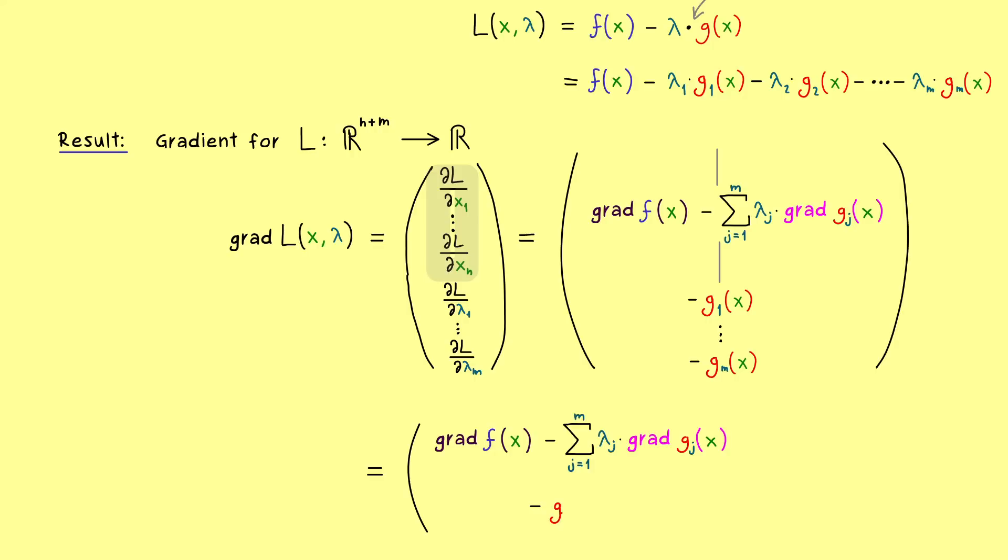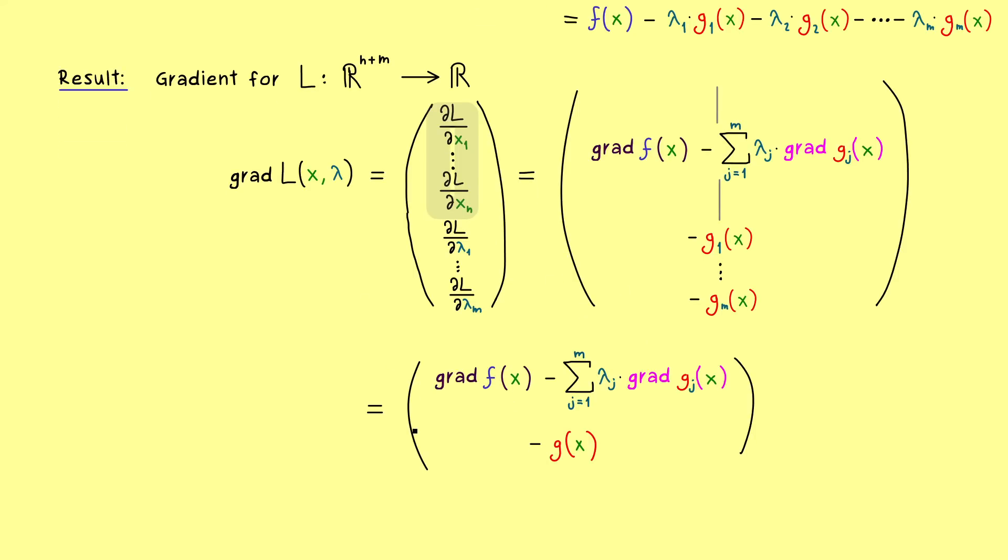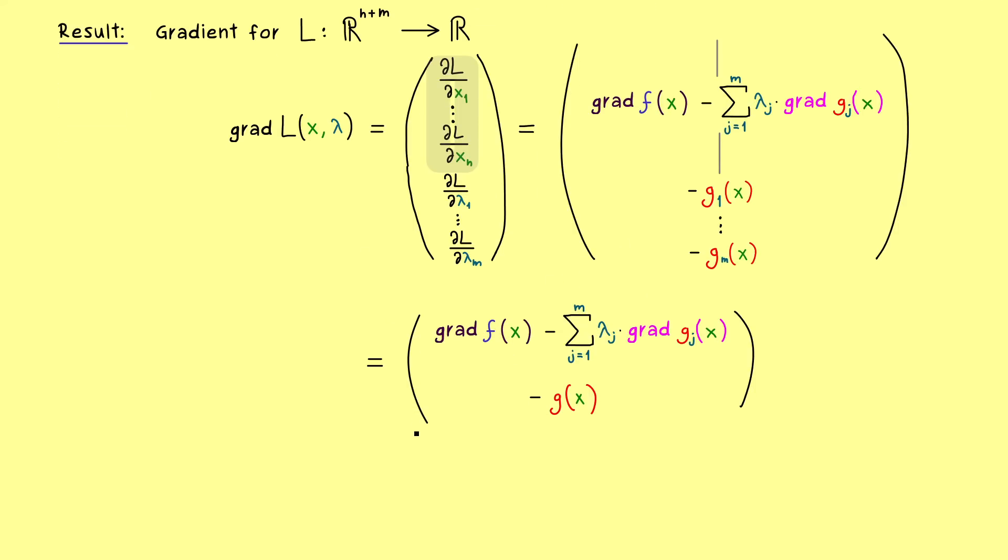So with these two essential parts, the gradient is easy to read. And moreover, the whole gradient of L vanishes if these two vectors here vanish. And there we already have it. This is the reformulation of the method of Lagrange multipliers. We see, the gradient of the Lagrange is zero if and only if our two equations are satisfied.